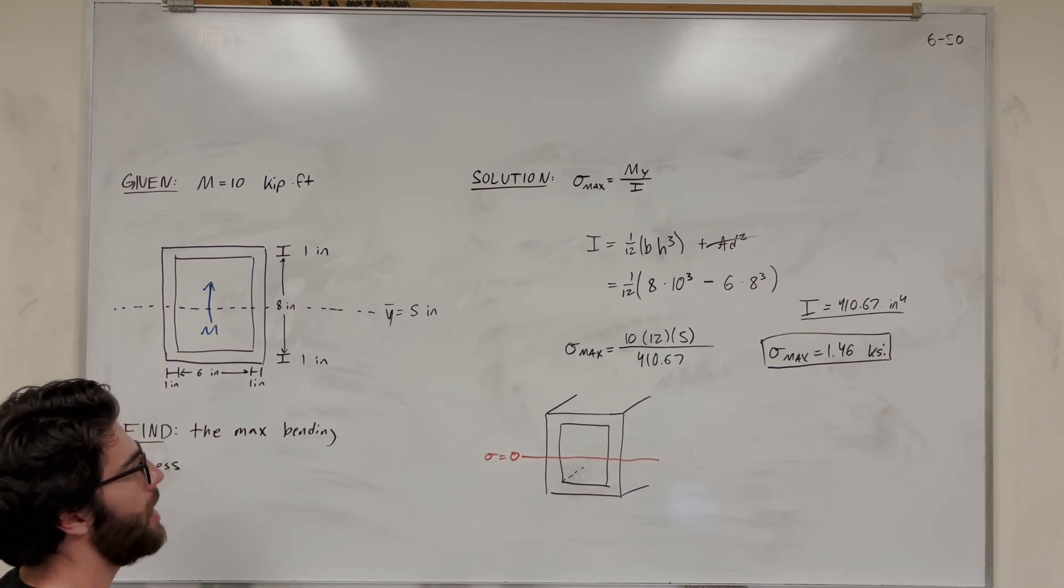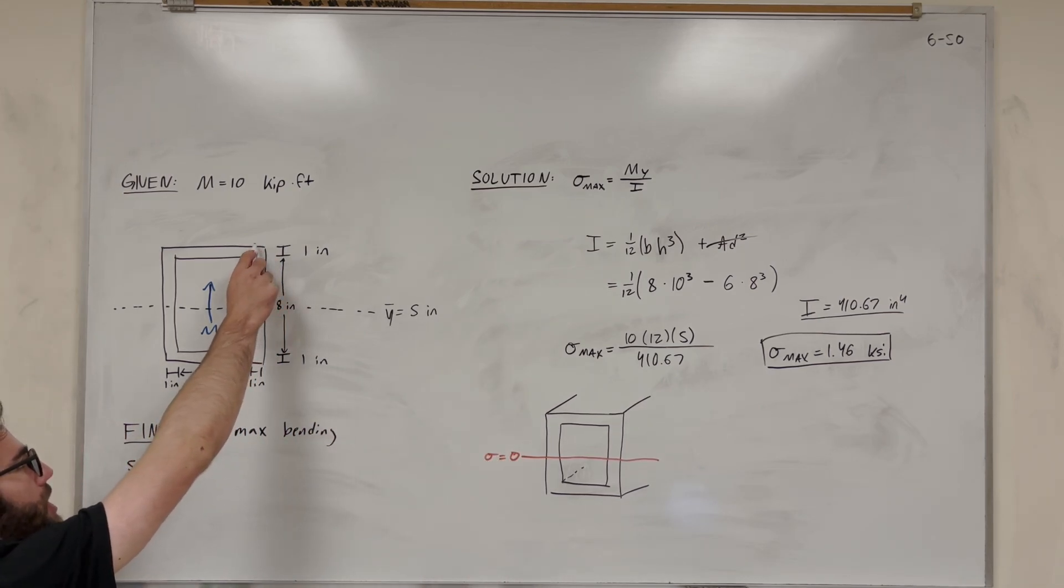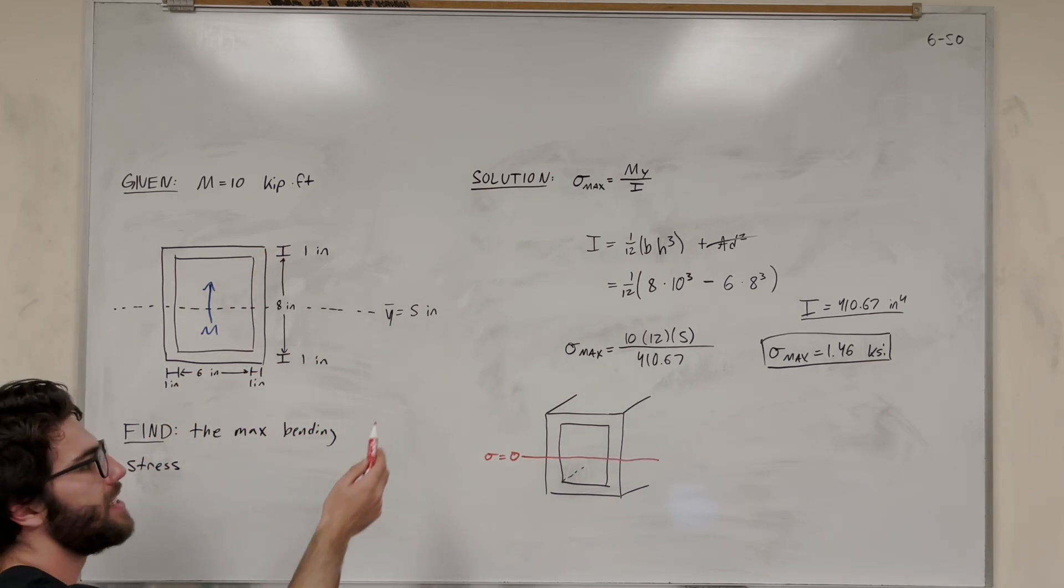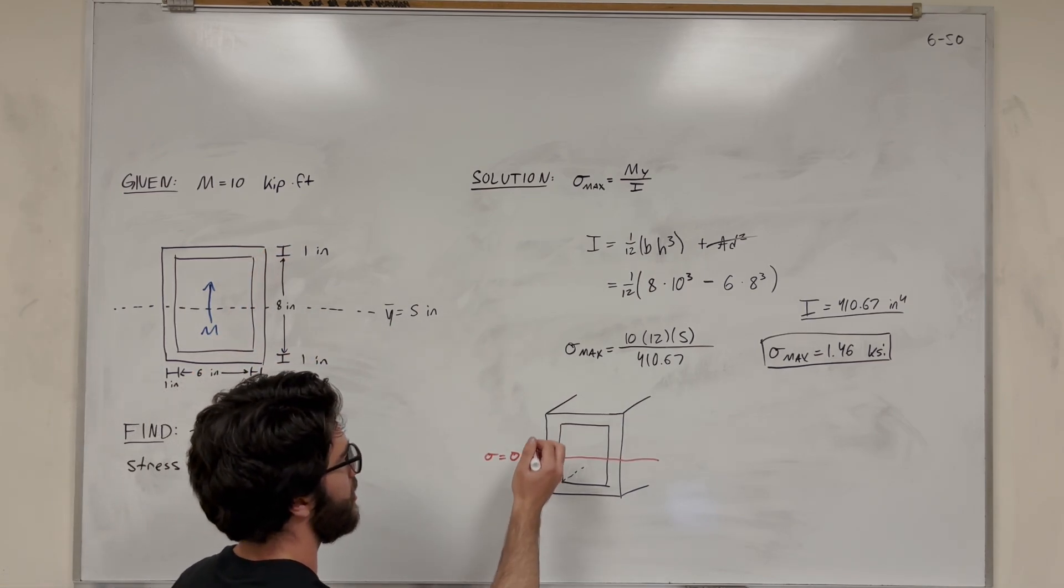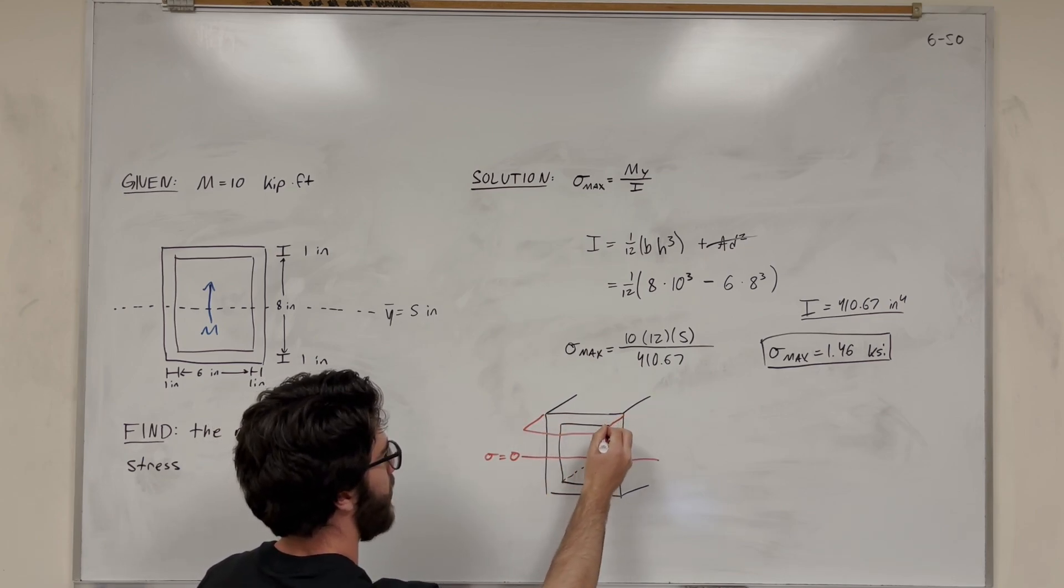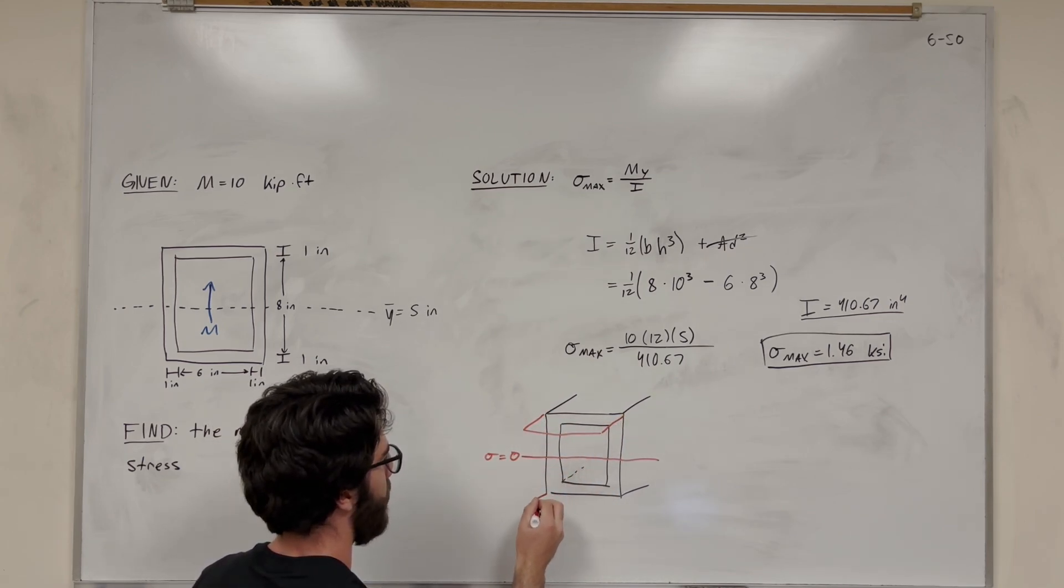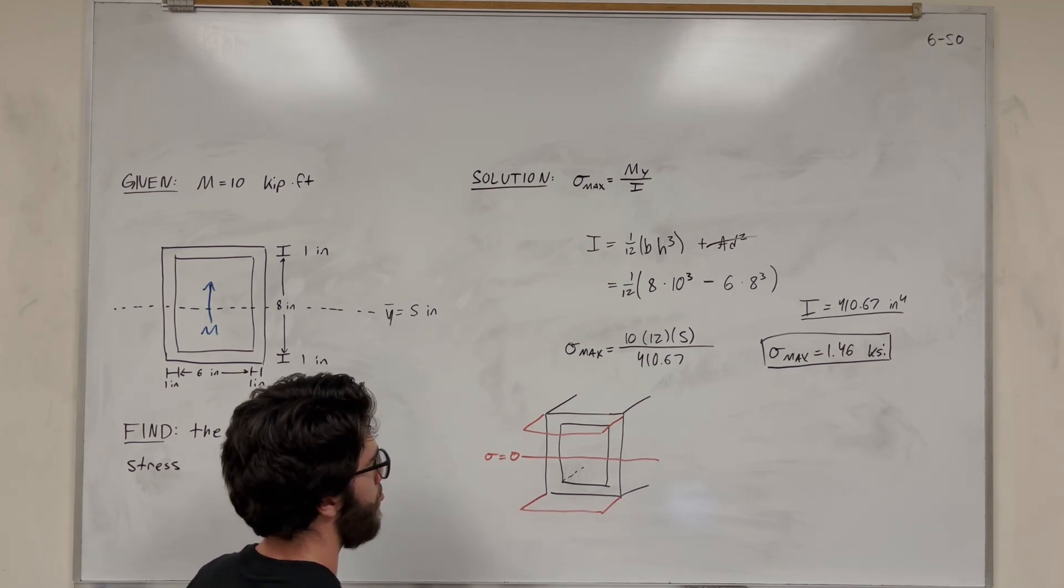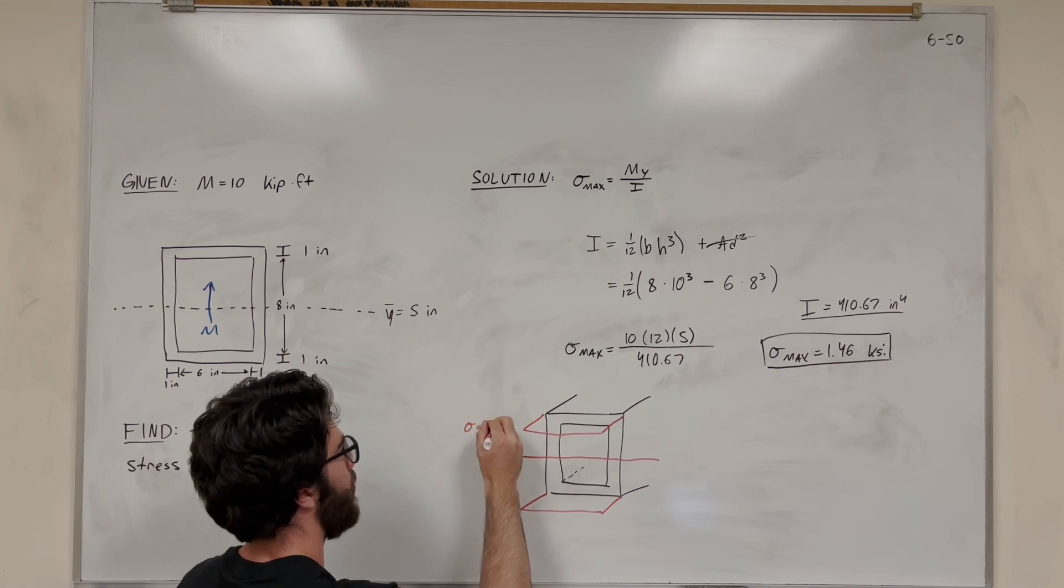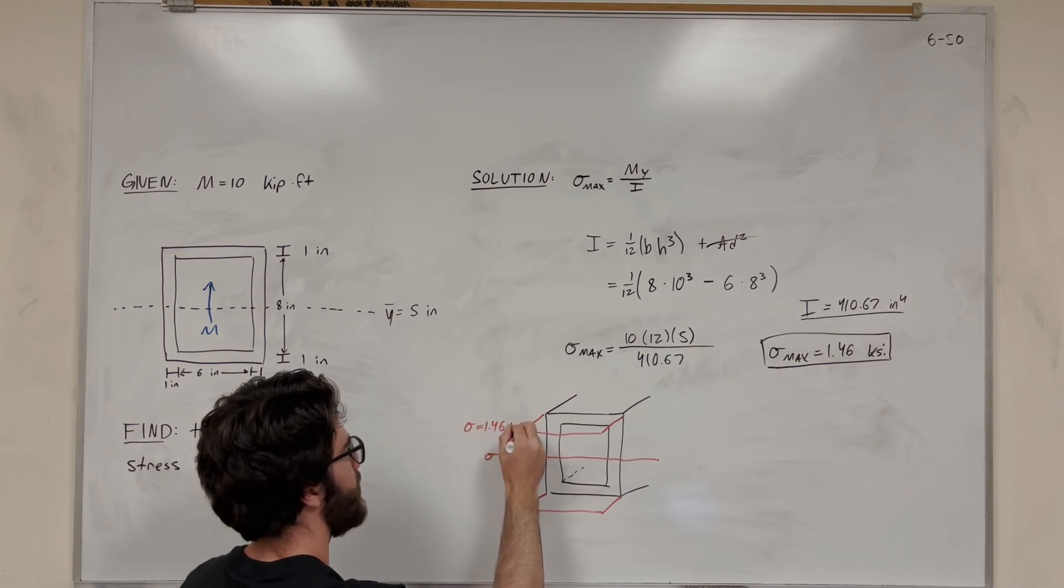Then we know that our maximum bending stress occurs at the furthest point. So it's going to be at the top and the bottom, which are 5 inches away from the center of mass, is where the max bending stress occurs. So we can maybe draw that out here, like this, and out here, like this. So this bending stress is maximum here. This is where it's equal to 1.46 KSI.